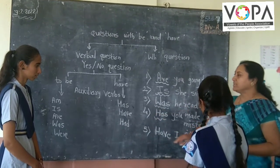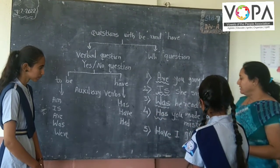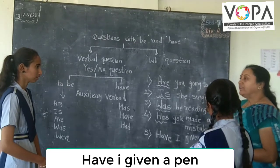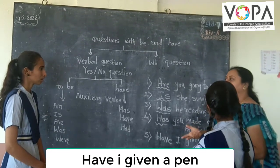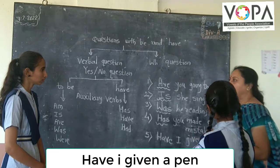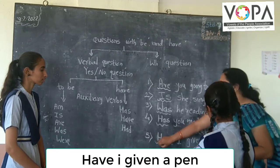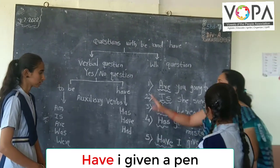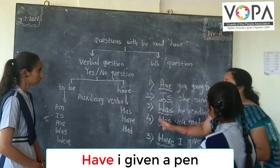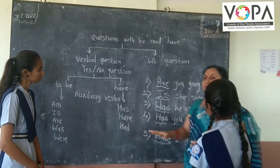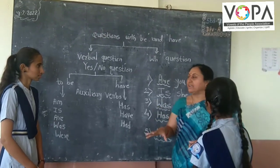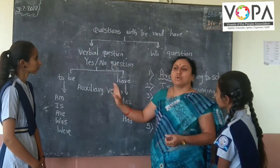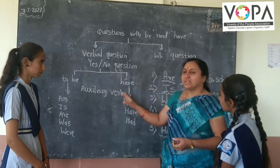Last question — now you read it. 'Have I given a pen?' So these are the verbal questions, and these verbal questions all start with helping words or auxiliary words.